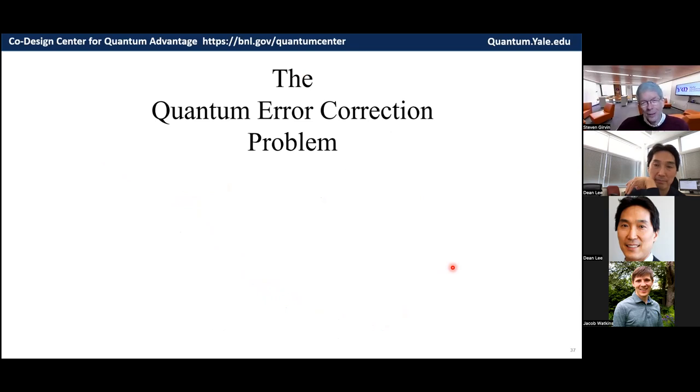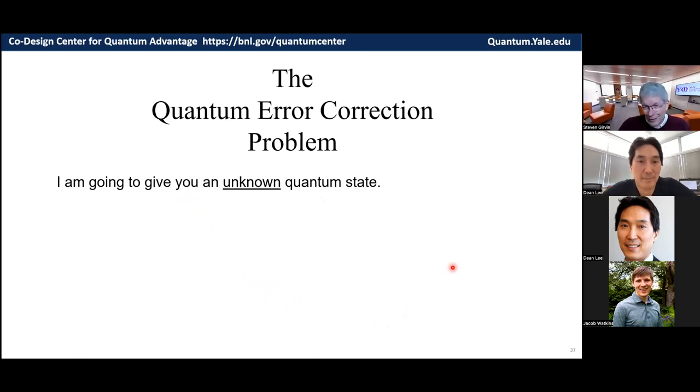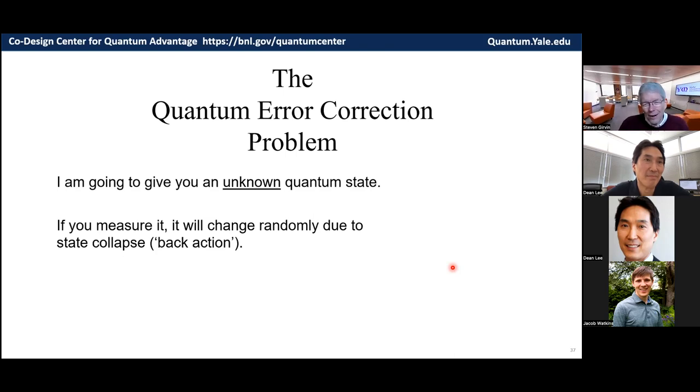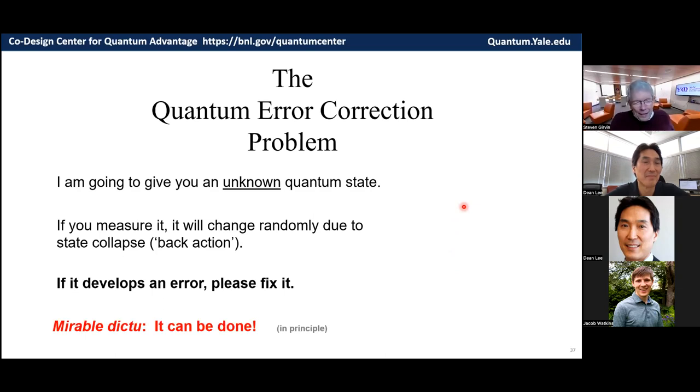So there are errors. So what is the error correction problem? So I'm going to give you an unknown quantum state. You're not allowed to know what it is because I plucked it out of the middle of running a quantum algorithm, let's say. And if you measure it to look for an error, I've showed you that it'll change randomly due to this state collapse or back action. So how we're going to identify the error. And your task is if this qubit develops an error, fix it. It seems impossible, but miraculously, it can be done as some fine print here. In principle, we're just beginning to learn how to do it. And we must learn how to do it if we're going to build large scale quantum computers, because they do always have small errors.